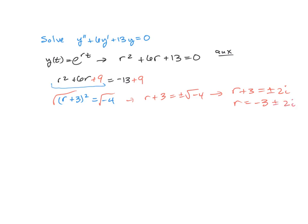Now we saw in the notes that the real part of this complex number always becomes the coefficient on the exponential, and the imaginary part of this complex number always becomes the coefficient on t inside the sine and cosine functions.